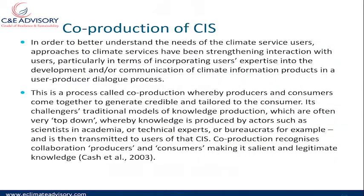Co-production of climate information service is a relatively new term. In order to better understand the needs of climate service users, approaches to climate service have been strengthening interaction with users. Before, we used to say CIS users or climate information users, but because of the need for the user to input into the type of climate information, the term has now changed. With co-production, there's a focus on incorporating users' expertise into the development and communication of climate information products in a user-producer dialogue process. This is a process whereby the user says what they want and the producer tries to produce exactly what the user wants.